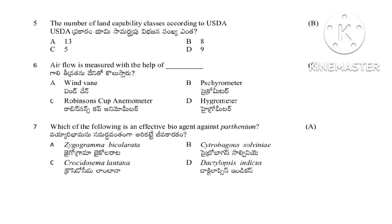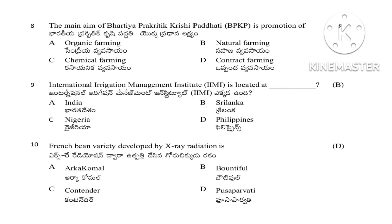Question 7: Which of the following is an effective bioagent against Parthenium? Options include Zygogramma bicolorata, Citrobagus salvinia, Crocydoneura lantana, and Dactylopius indicus. The answer is Zygogramma bicolorata. Question 8: The main aim of Bharatiya Prakruti Krishi Paddhati is promotion of — organic farming, natural farming, chemical farming, or contract farming. The answer is natural farming.